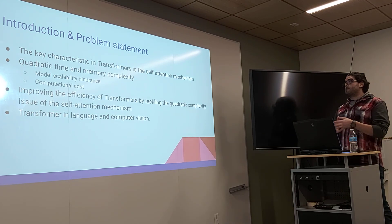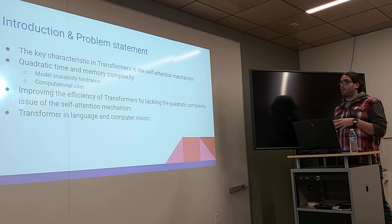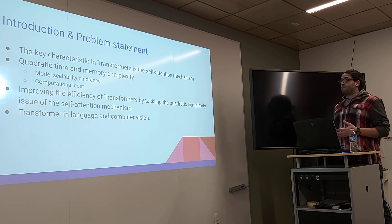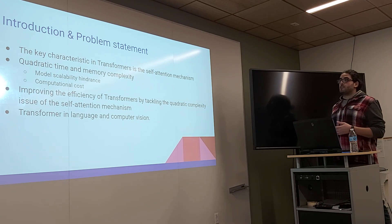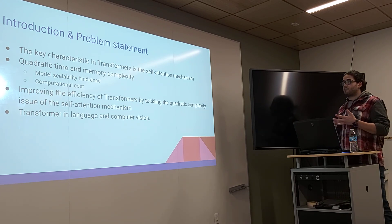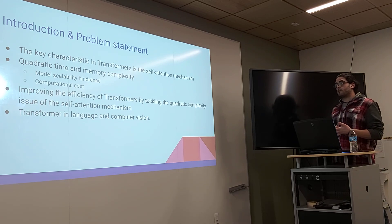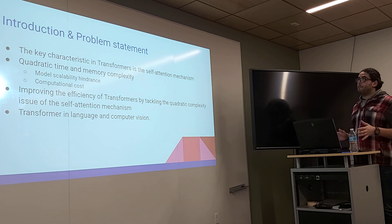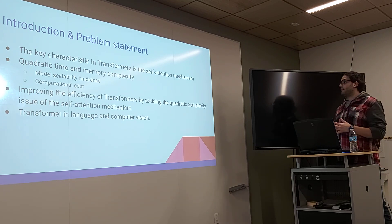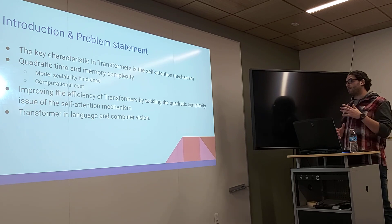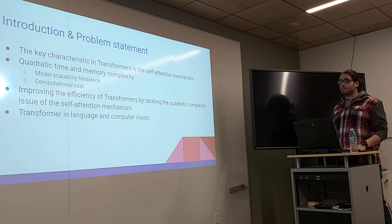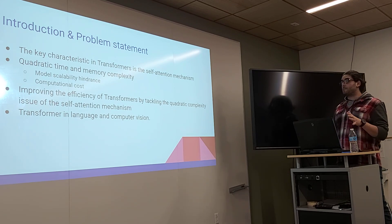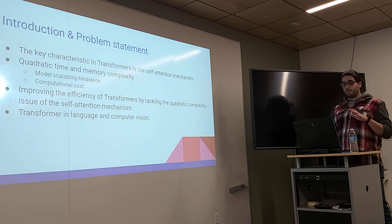The key characteristic in Transformers is the self-attention mechanism. And the problem is with the quadratic time and memory complexity, which induces and hinders in terms of model scalability and computational cost. So this survey is about gathering many articles working on improving the efficiency of transformers by tackling the quadratic complexity issue of the self-attention mechanism. These papers are in the NLP and computer vision domain.